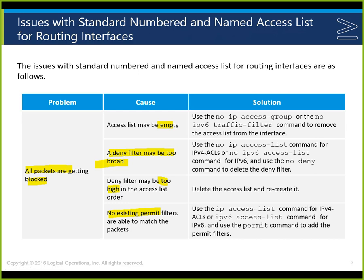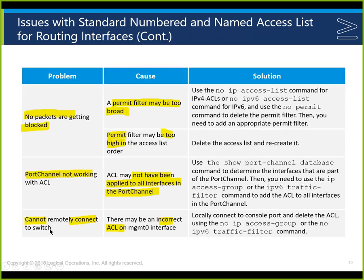To get an empty access list, you'd have to edit it so it has no entries. If you type just 'access-list 1' without a permit or deny, it tells you it's an incomplete command. If no packets are getting blocked, check whether the permit filter is too high or too broad in the access list. Use 'no ip access-list' to delete and rewrite the list. For a named list, you can go in and edit it directly.